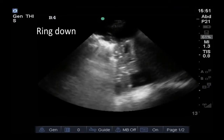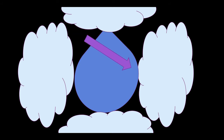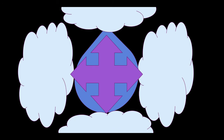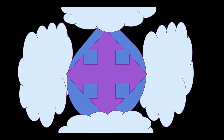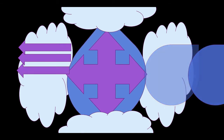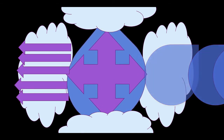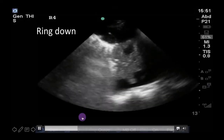Ring down artifact is a similar appearing artifact caused by resonance. Ring down happens when echoes enter fluid that is surrounded by air bubbles. The echoes get trapped bouncing from air bubble to air bubble inside the fluid. This makes the fluid resonate or vibrate and so the fluid continually sends ultrasounds back to the probe, resulting in the image of a bright hyperechogenic line in the same plane as the beam.